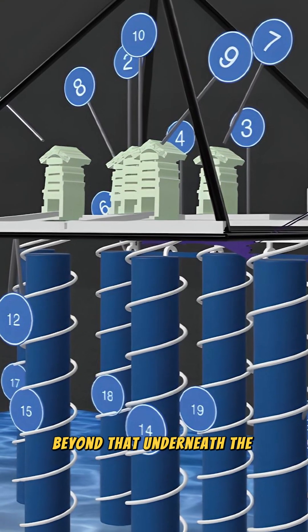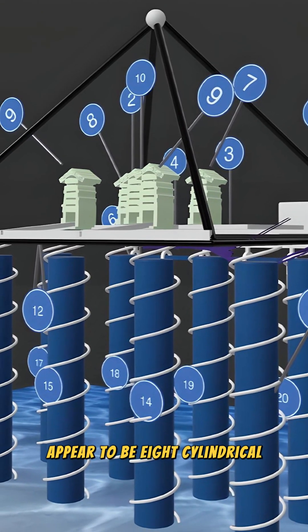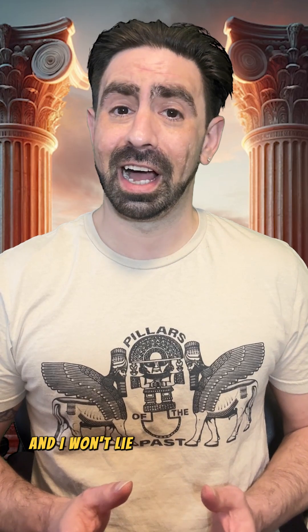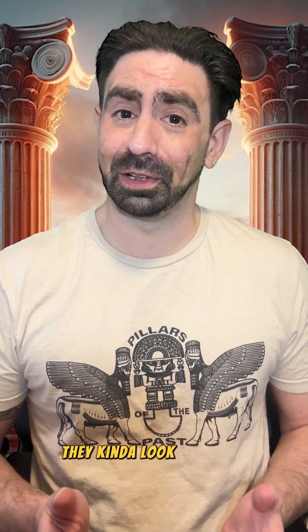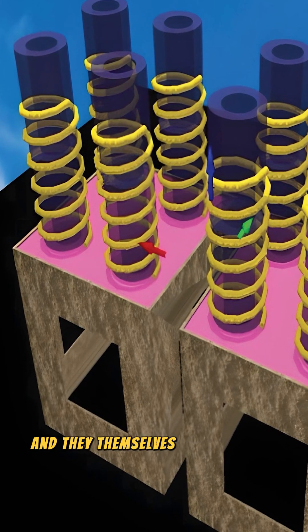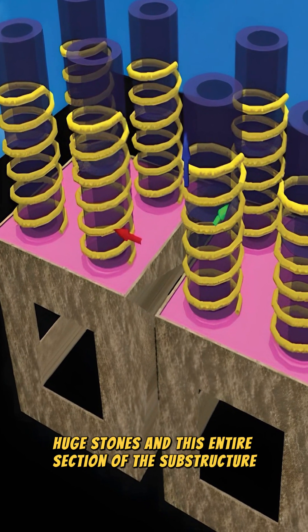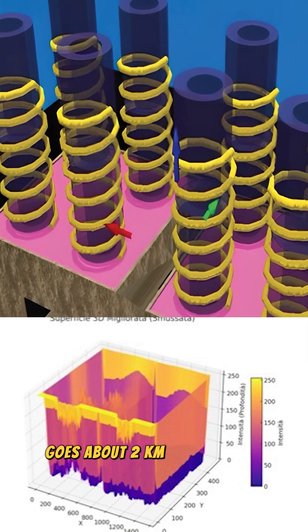Beyond that, underneath the pyramid itself appear to be eight cylindrical, hollowed-out columns with spirals wrapping around them. And I won't lie, from the images at least, they kind of look like coils. They themselves appear to sit on two non-natural huge stones, and this entire section of the substructure goes about two kilometers underground.